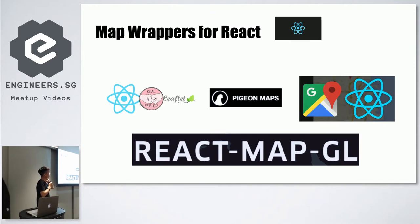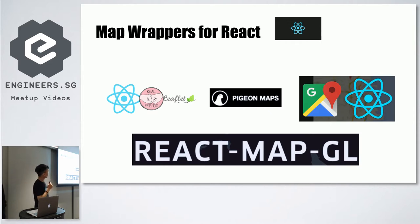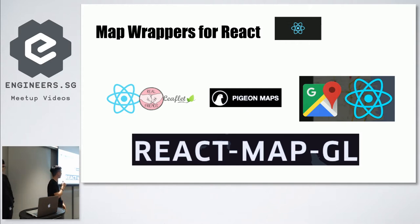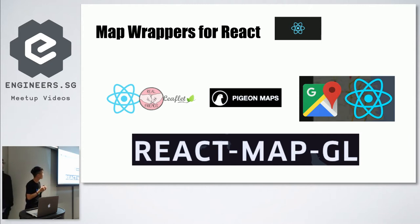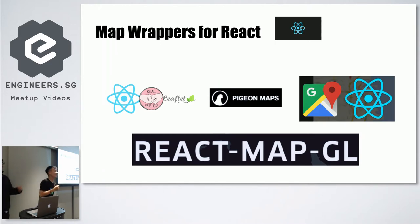These are the more popular React map wrappers. On the left you have React Leaflet, in the middle is Pigeon Maps, and on the right of course is the famous Google Maps that everybody knows. React MapGL — so why did we choose React MapGL? Firstly, it's a wrapper developed by Uber. Do we have anybody from Uber, Gojek, or Grab here? You can hire us.